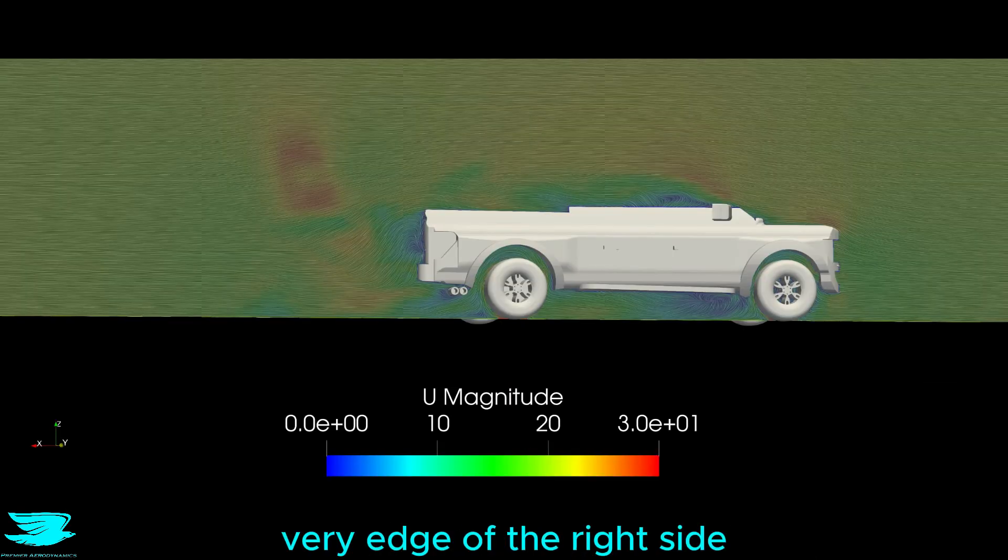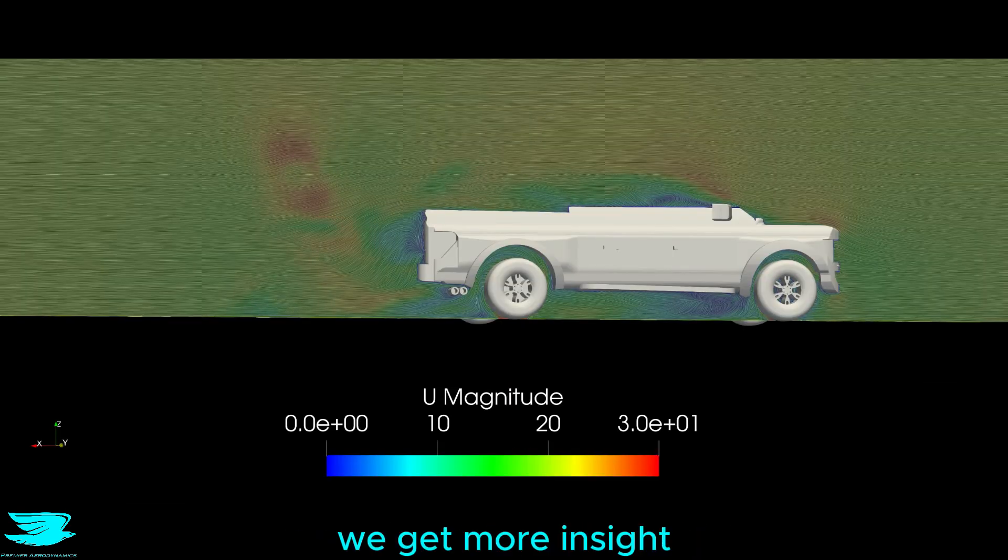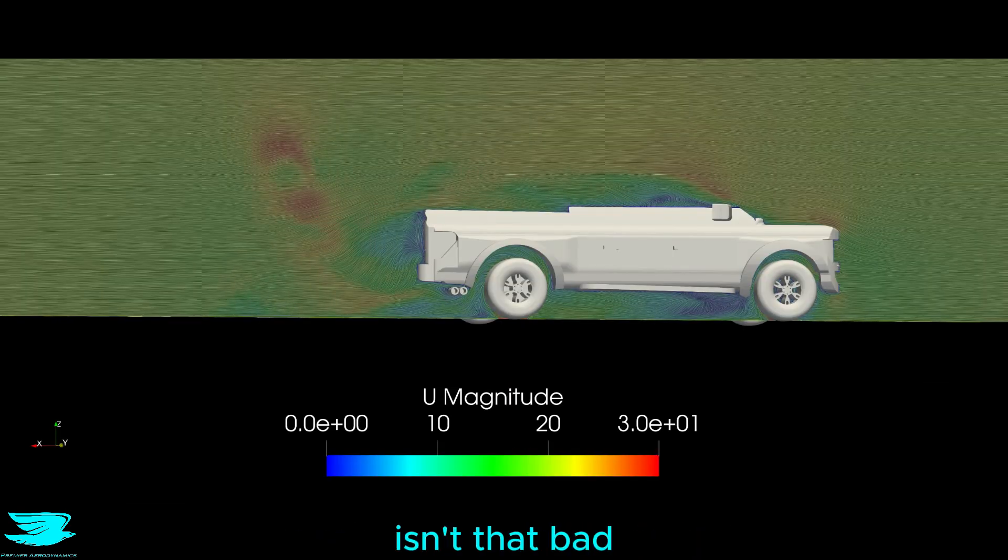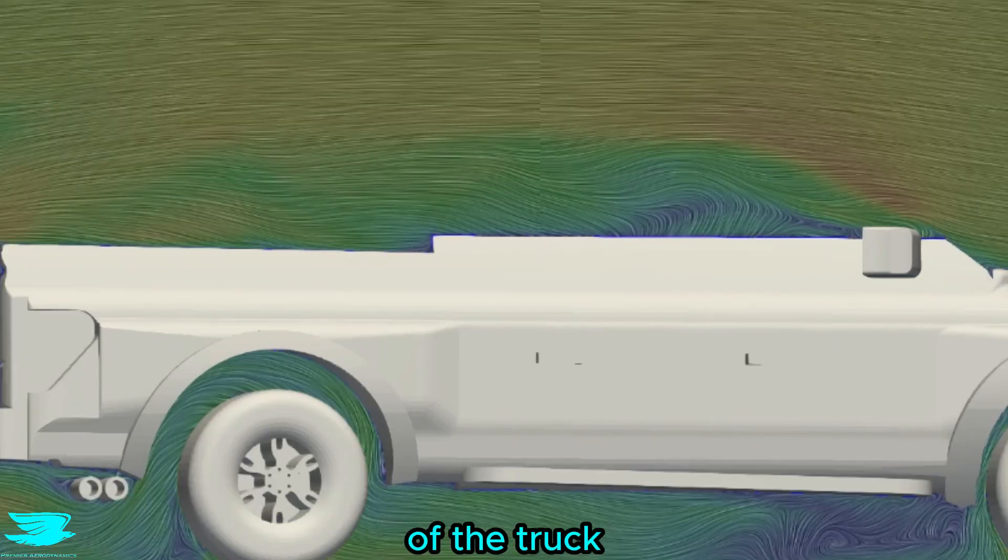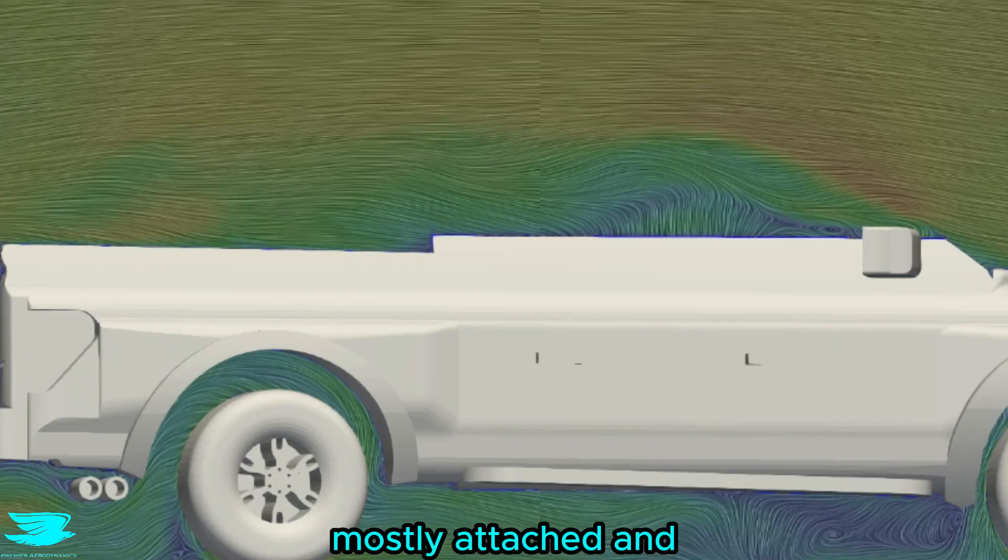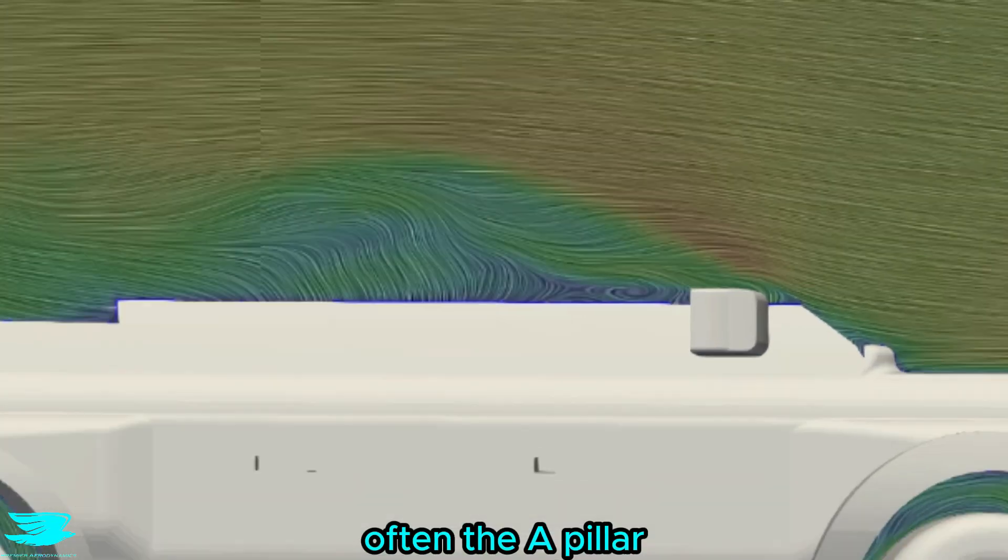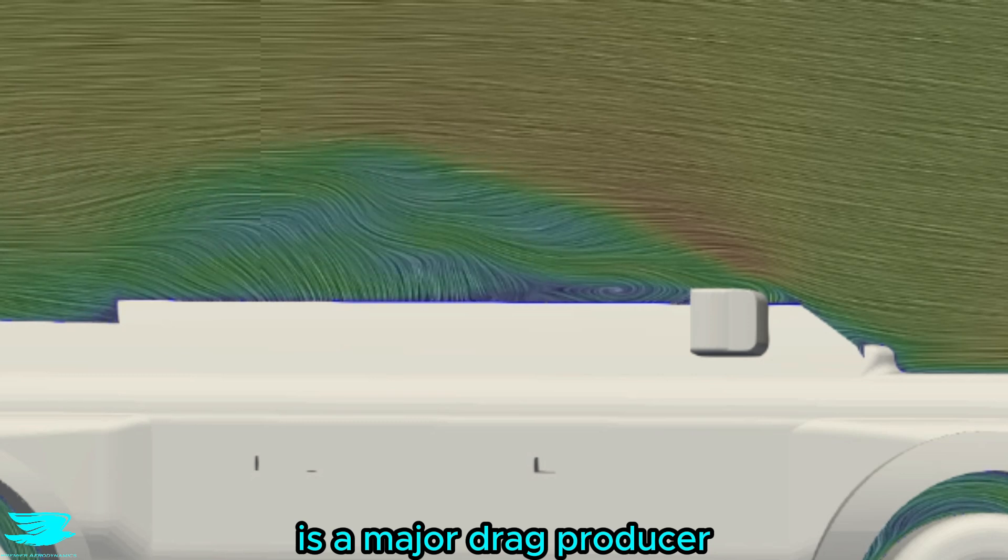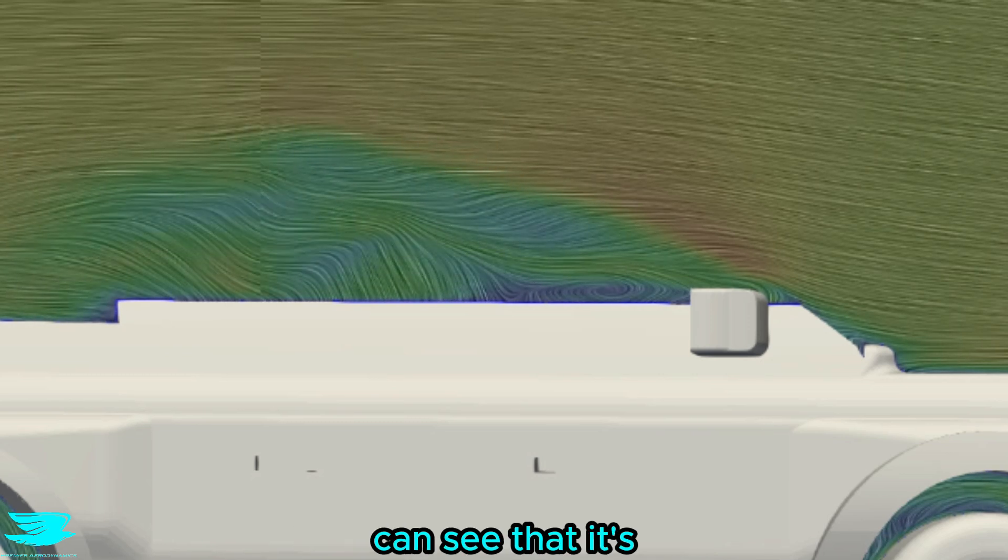Looking at the very edge of the right side, we get more insight into why the wake isn't that bad. We can see that over the side of the truck, the flow is mostly attached and moving quite fast. Often, the A-pillar is a major drag producer, but here, we can see that its effects aren't that bad.